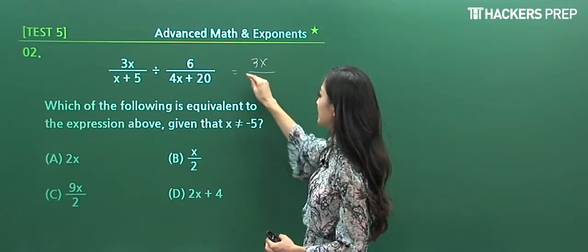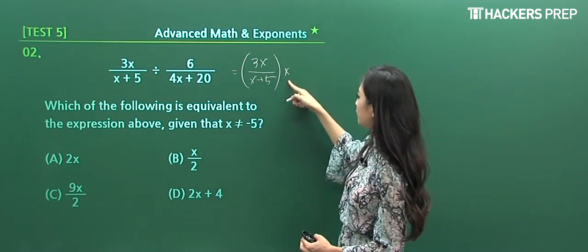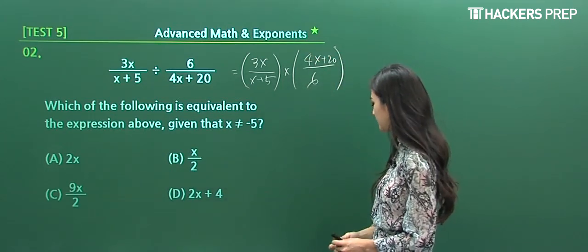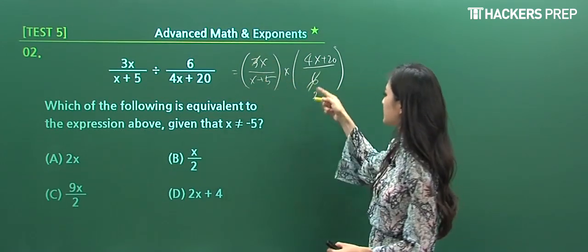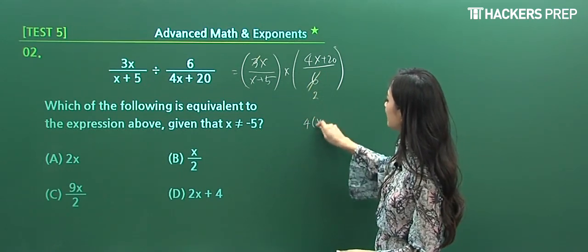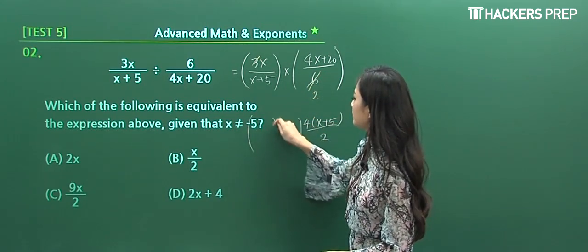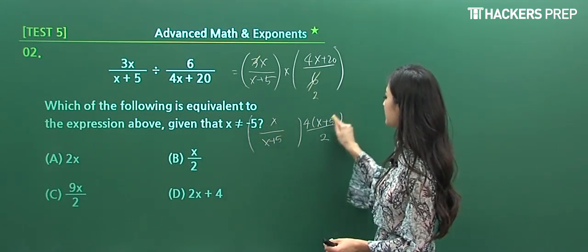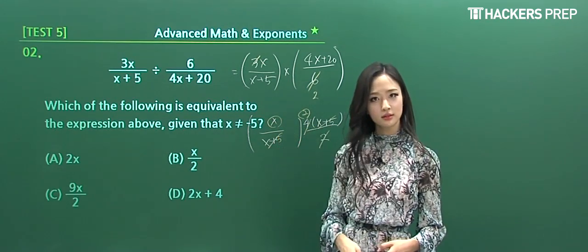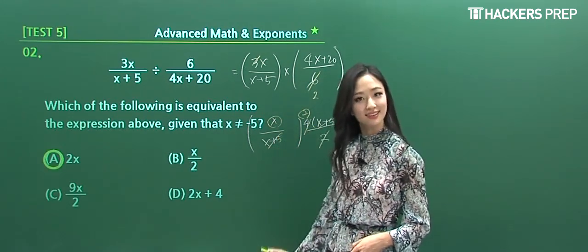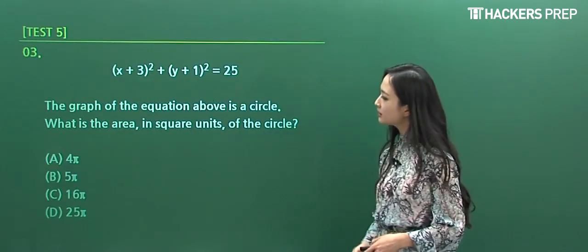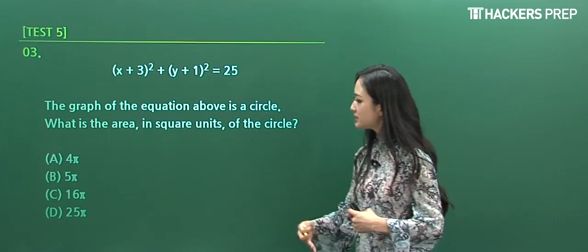We have 3x over (x+5), multiplied by the flipped second term: (4x+20) in the numerator, 6 in the denominator. We can simplify all these terms and reduce the right-hand side to two. I can take out the value of four from this expression. Everything cancels out with the (x+5) term. After further simplification, we're left with 2x. That's why our answer becomes A.